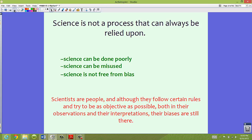So scientists are people, and although they follow certain rules and try to be as objective as possible, both in their observations and their interpretations, their biases are still there. So sometimes when we do read some of these scientific discoveries, we have to think about whether or not their methods are proper, whether or not their conclusions are true to their data, and sort of see if at all possible they may have made a mistake. And that's what science does. We retest, and more retesting to see if we can replicate results.